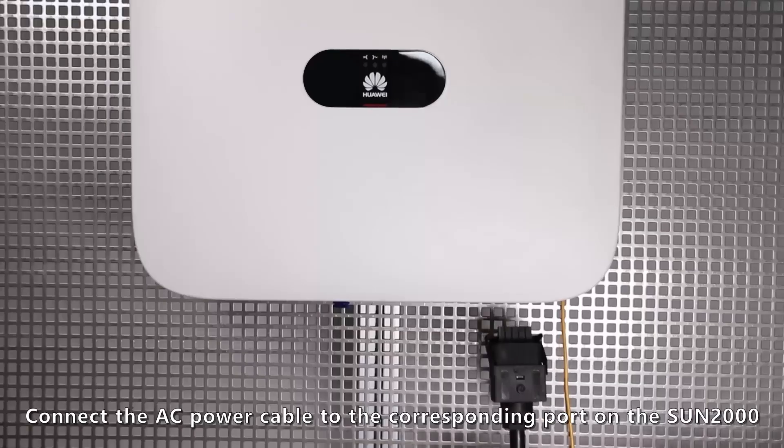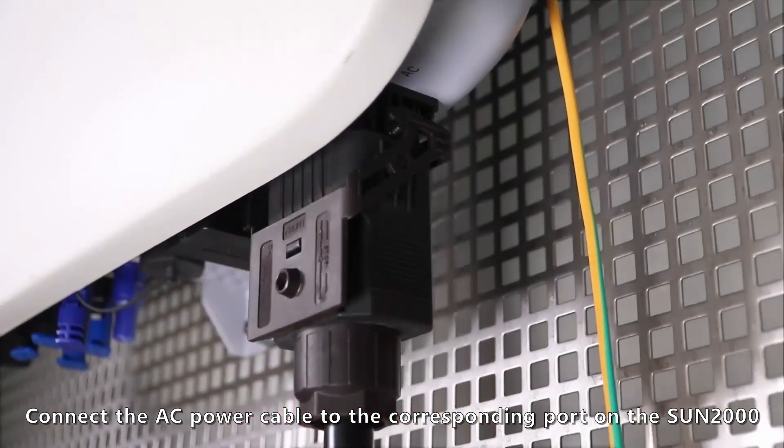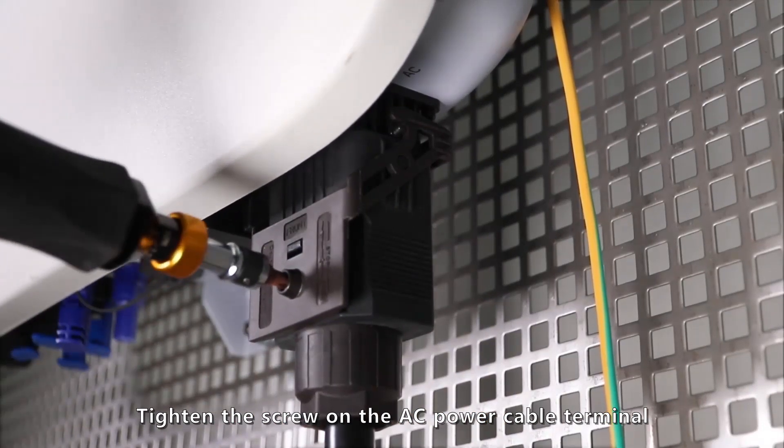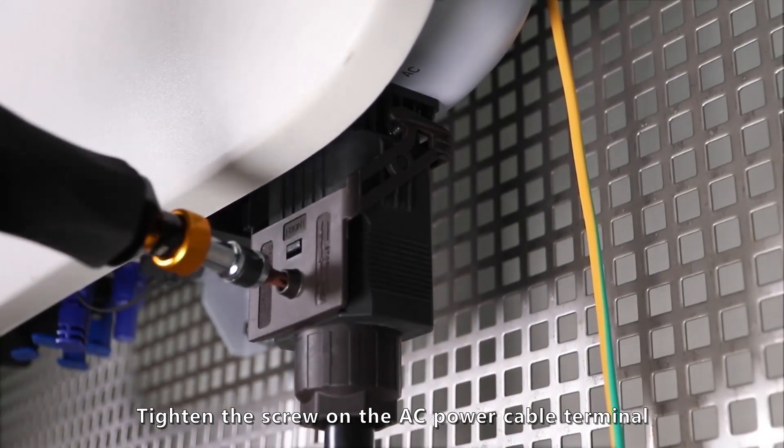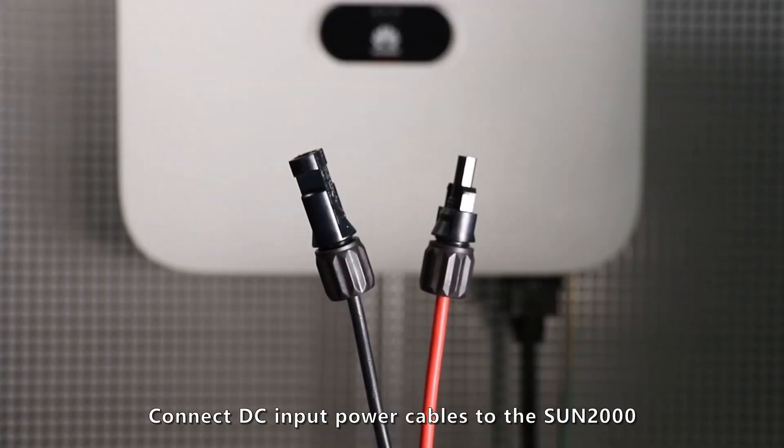Connect the AC power cable to the corresponding point on the Sun 2000. Tighten the screw on the AC power cable terminal. Connect DC input power cables to the Sun 2000.